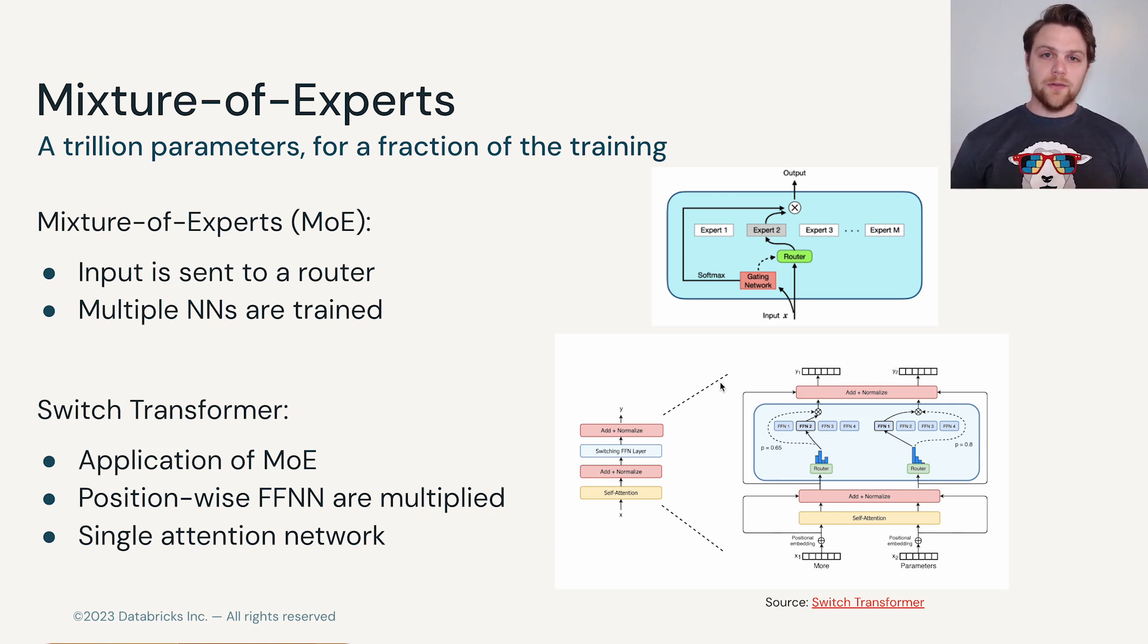This is how we could easily go from multiple 100 billion parameter transformers all the way up to trillion and multi-trillion parameter models. More research is being conducted into how these mixture of experts approaches work, but we've seen excellent results with the switch transformer. These still require a lot of compute resources, and all of the optimizations that we've seen up till now will be useful as we dive deeper into the realm of mixture of experts.